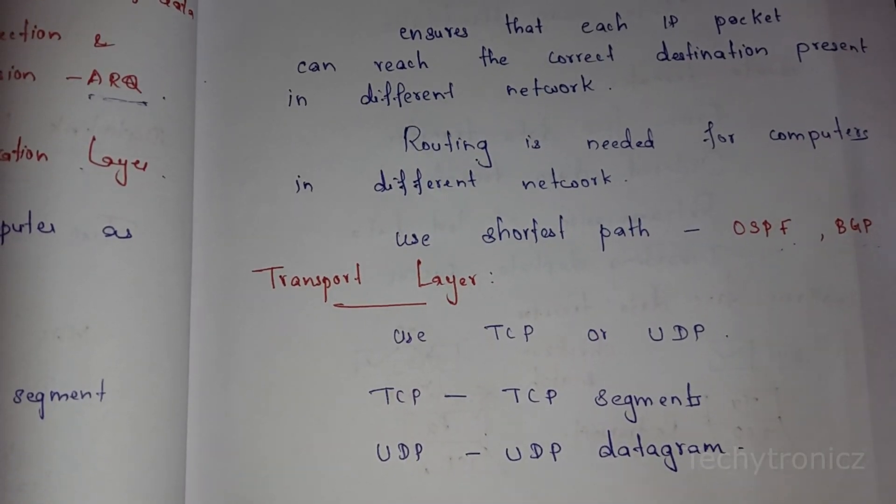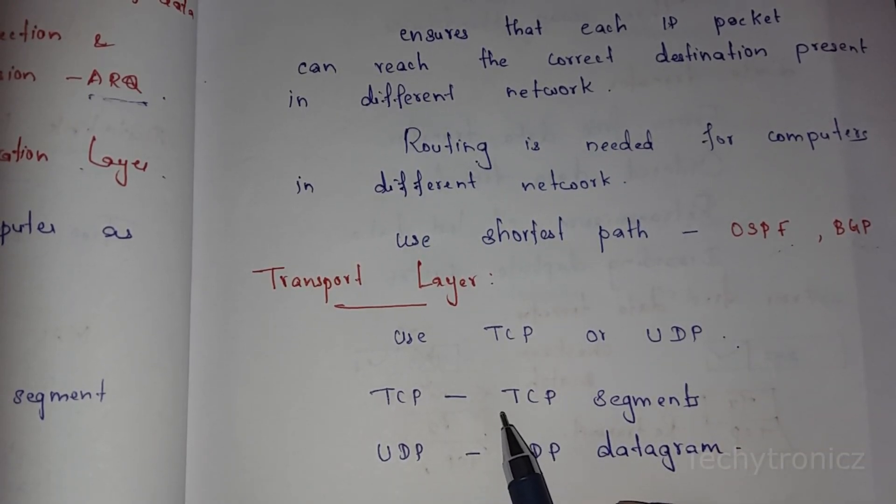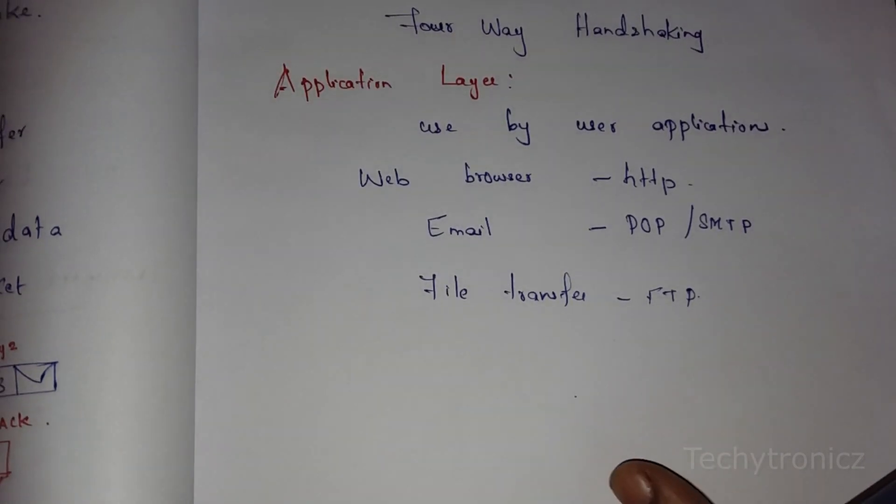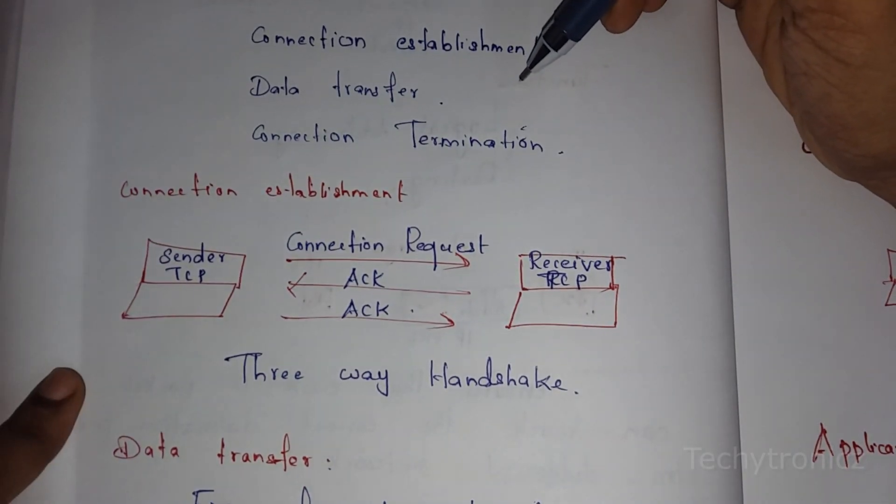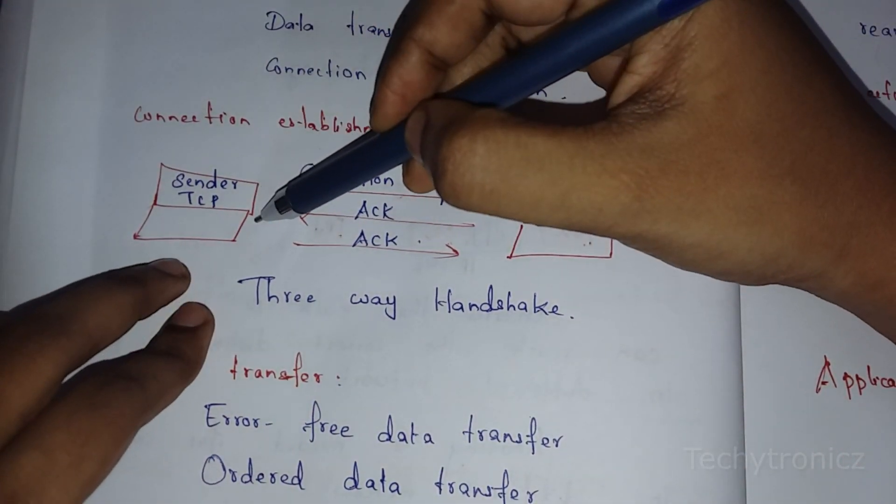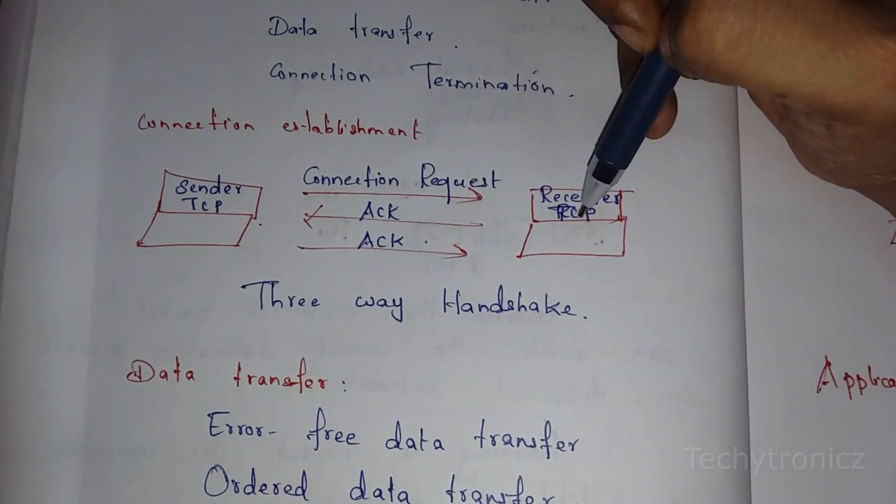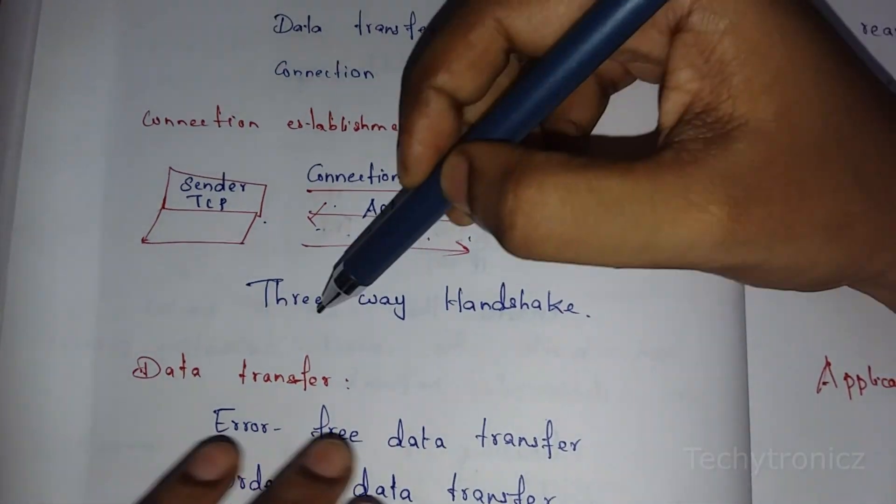The next layer is the Transport Layer, which uses two main protocols: Transmission Control Protocol (TCP) and User Datagram Protocol (UDP). TCP splits data into segments. The Application Layer data is called segments if using TCP protocol, or UDP datagrams if using UDP. There are three phases in TCP: connection establishment, data transfer, and connection termination. In connection establishment, before transferring data, the sender's TCP sends a connection request for safe communication to the receiver. This is called three-way handshaking.